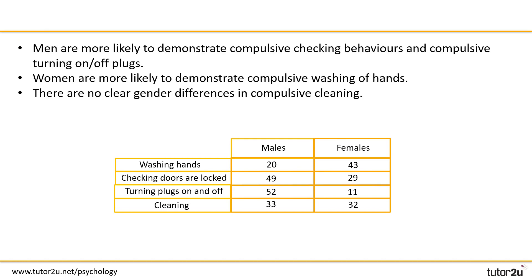Here are some suggested answers you may have got. The data shows that men are more likely to demonstrate compulsive checking behaviors and compulsive turning on or off of plugs. Women are more likely to demonstrate compulsive washing of hands. This tells us also that there is no clear gender difference in compulsive cleaning — so that would be the conclusion drawn.